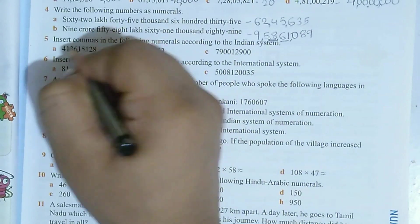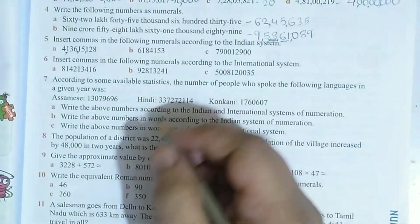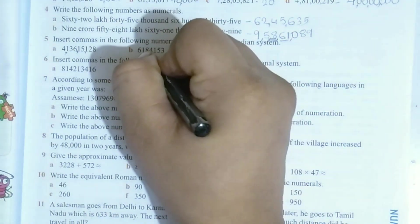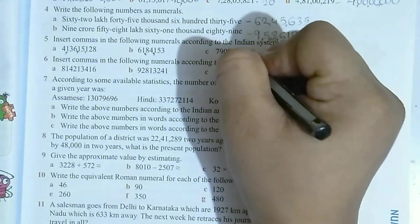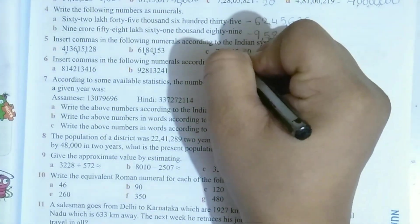Then every 2 digits comma will come. First 3, then 2, then 3, 2, 2.